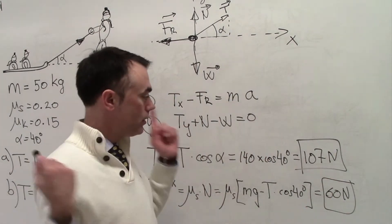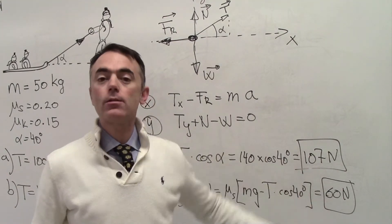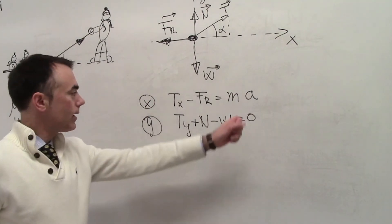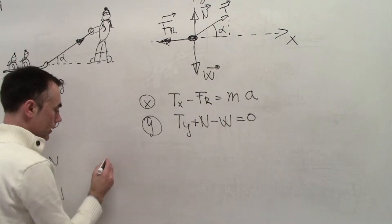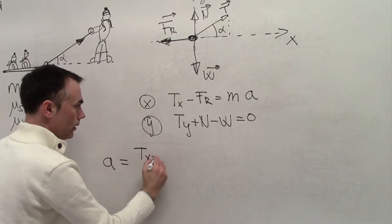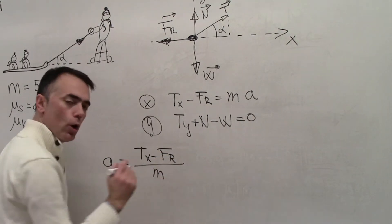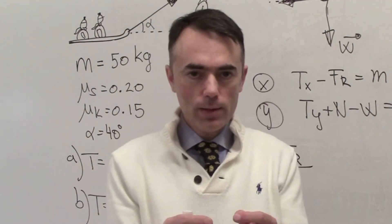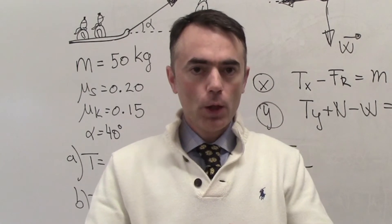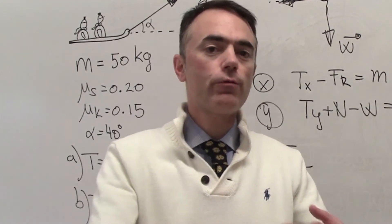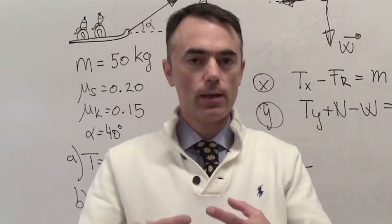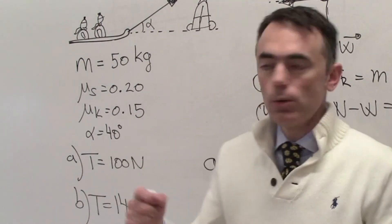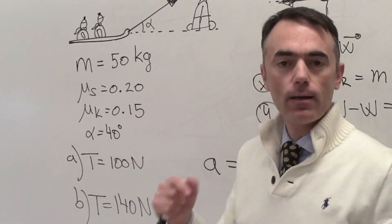Since 107 newtons exceeds the 60-newton friction limit, the adult can move the sledge. Now we calculate the acceleration. We use the expression: a equals (Tx minus Fr) divided by mass. Be careful — so far we used the static coefficient to determine whether motion occurs. Now that we know it is moving, we must use the kinetic friction coefficient.